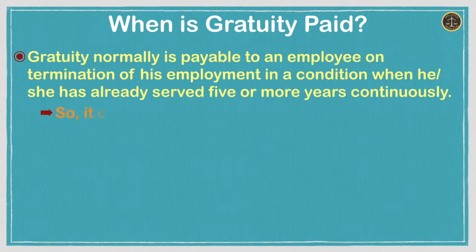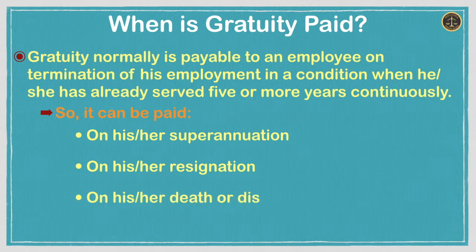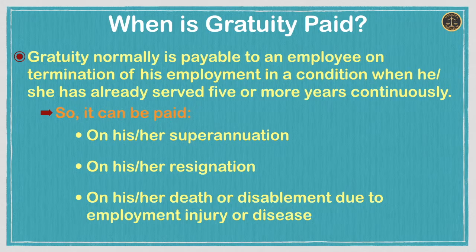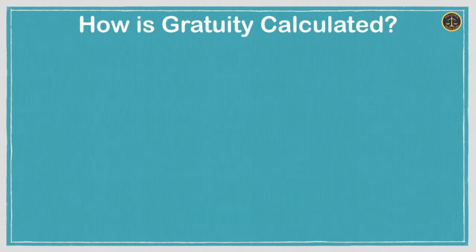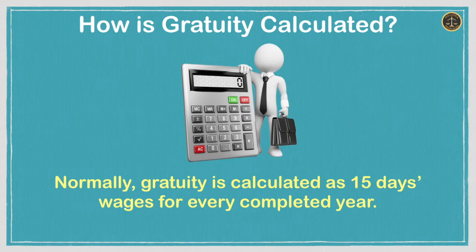So it can be paid on his or her superannuation, on his or her resignation, or on his or her death or disablement due to employment injury or disease. Now the next question is: how is gratuity calculated? Normally, gratuity is calculated as 15 days wages for every completed year.